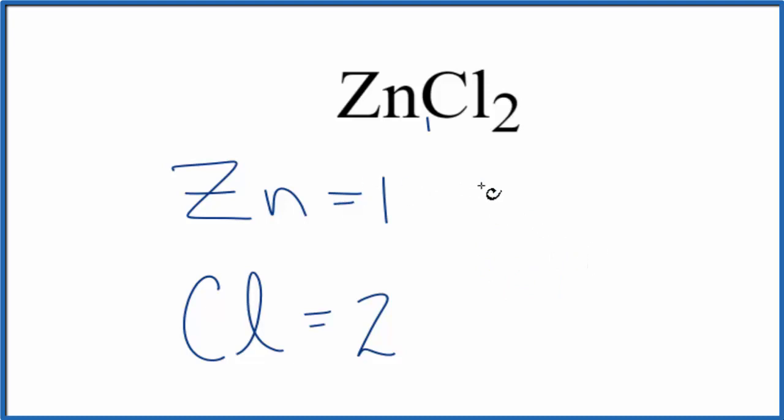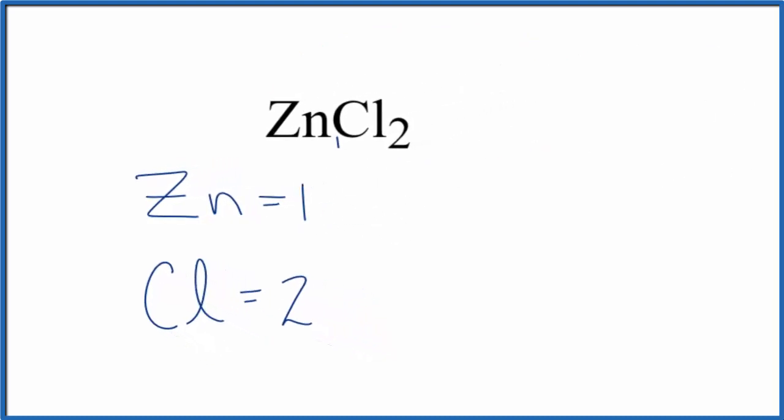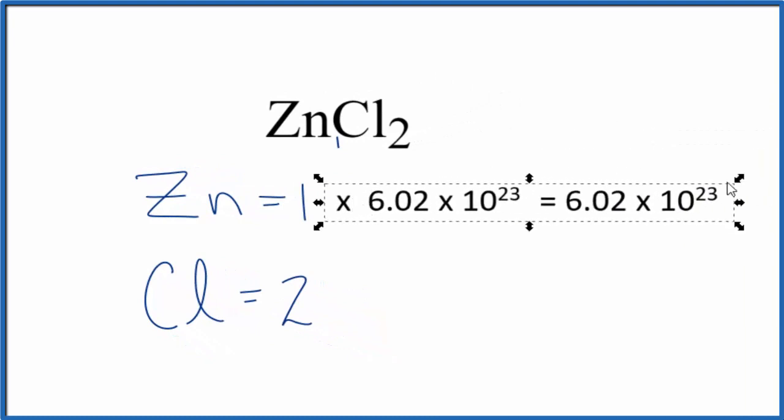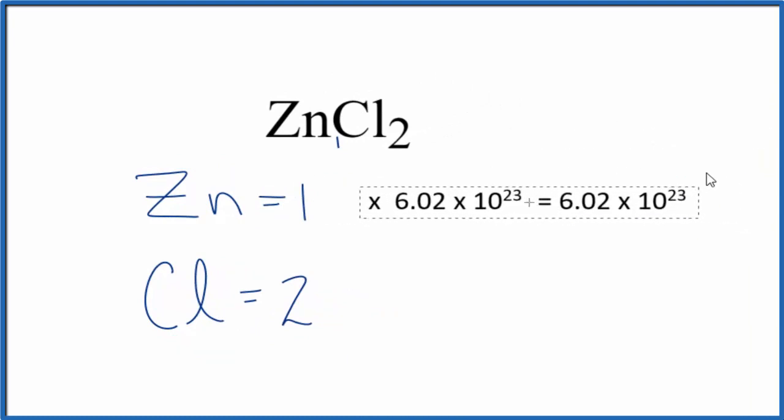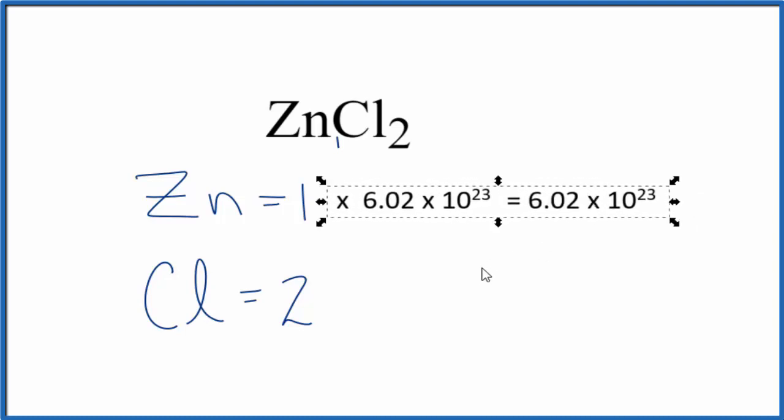Sometimes you're asked to figure out the number of atoms of, say, zinc in one mole of ZnCl2. To do that, we multiply the number of zinc atoms, one, times Avogadro's number. So that'll tell us the number of zinc atoms in one mole of ZnCl2.